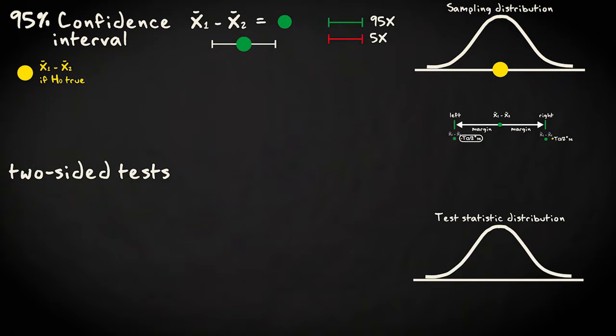In both cases, a decision is based on whether boundary values are exceeded. The boundaries are determined by the significance level or the confidence level, which form each other's complement.